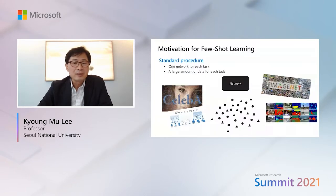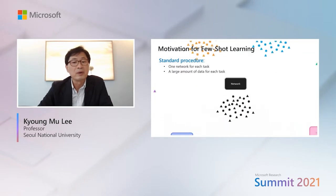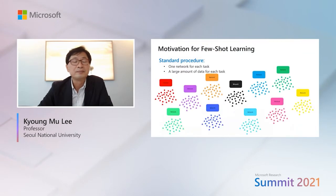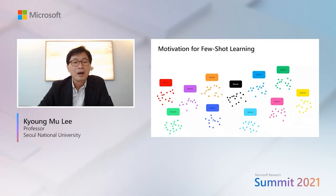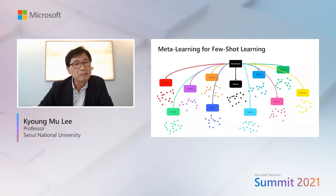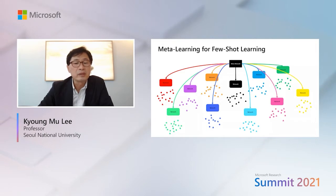The standard supervised learning paradigm requires a large amount of data for each particular task, while few-shot learning aims to learn a new task under a few-data regime. In order to achieve such a goal, meta-learning tackles the problem by learning prior knowledge shared among tasks, which is then used to quickly adapt to each new task with only a few labeled examples.